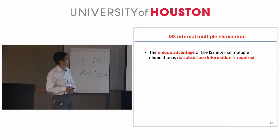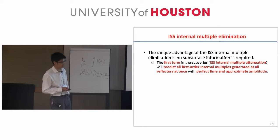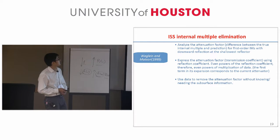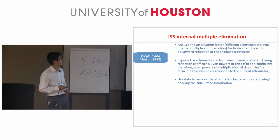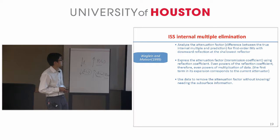The unique advantage of the inverse scattering series internal multiple elimination is that no subsurface information is required. The first term in the series is the ISS internal multiple attenuation algorithm, which can predict all internal multiples generated at all reflectors at once, with perfect time and approximate amplitude. The initial idea proposed by Weglein-Madison is to analyze the attenuation factor — the difference between attenuation and elimination — and to use higher orders of the data to remove the attenuation factor without knowing any subsurface information.